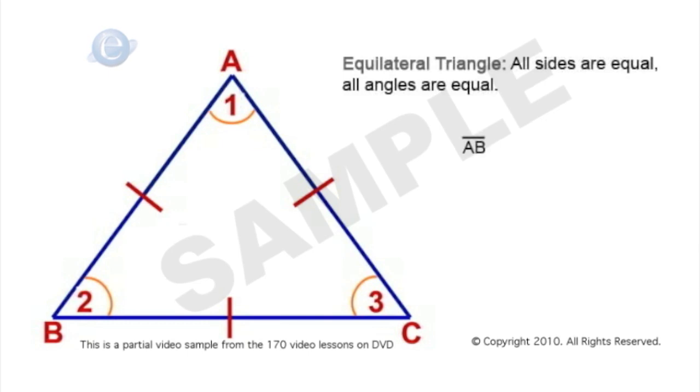So we say side AB is equal to side BC is equal to side AC and angle one is equal to angle two is equal to angle three.